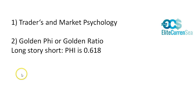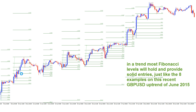The importance of fibs is specifically valuable when there is a trend. In a trending mode, most Fibonacci levels will hold and provide solid entries. Here you can see an example on the pound-dollar in recent weeks — eight times in a row the Fibonacci levels worked very neatly to give a bounce for further upside. That only happens when the market is trending — that is the key to keep in mind.